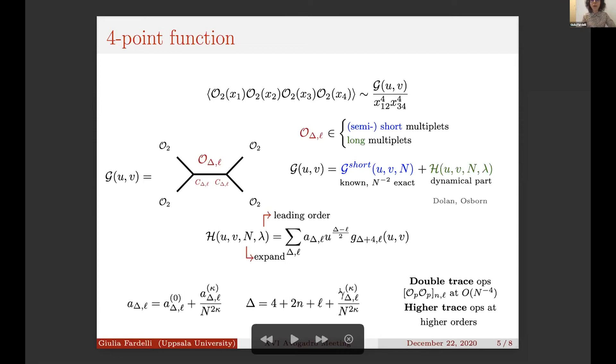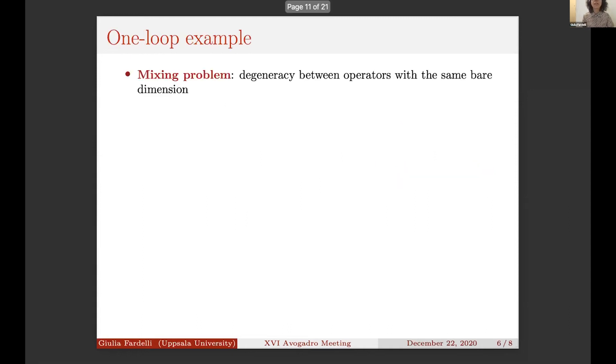Up to order N^{-4}, the only operators that can be exchanged in the OPE are double-trace ones, while at higher orders also higher-trace operators start contributing. But let's consider only double-trace operators. It is known that they can mix amongst themselves, and there is a degeneracy between operators which have the same bare dimension but acquire different anomalous dimensions.